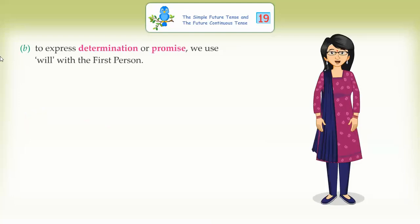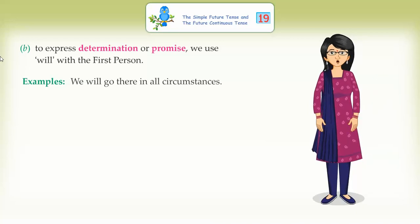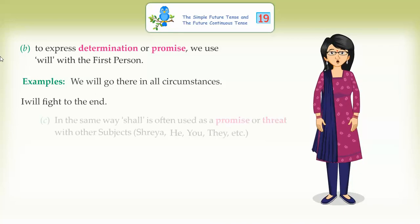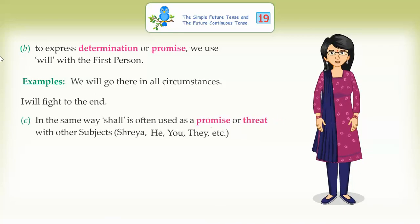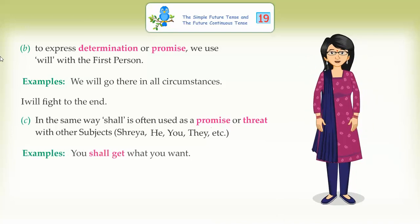To express determination or promise, we use will with the first person. Examples: we will go there in all circumstances. I will fight to the end. In the same way, shall is often used as a promise or threat with other subjects. Examples: you shall get what you want. He shall not enter this place.